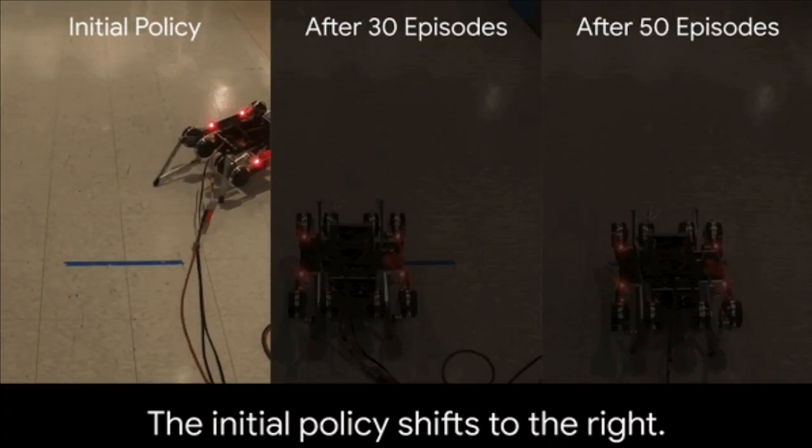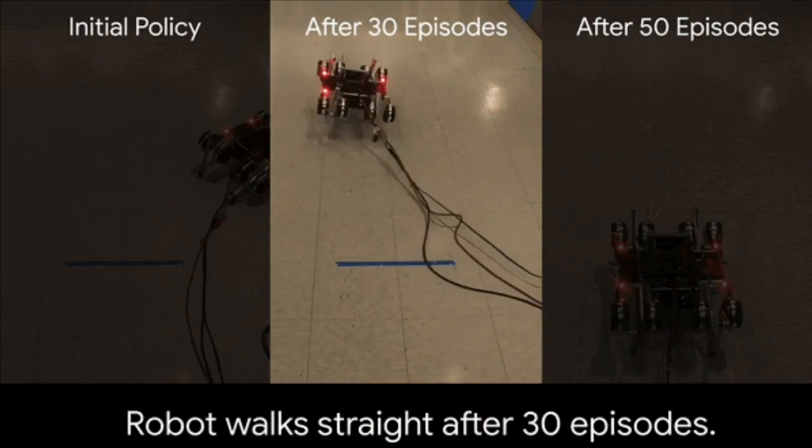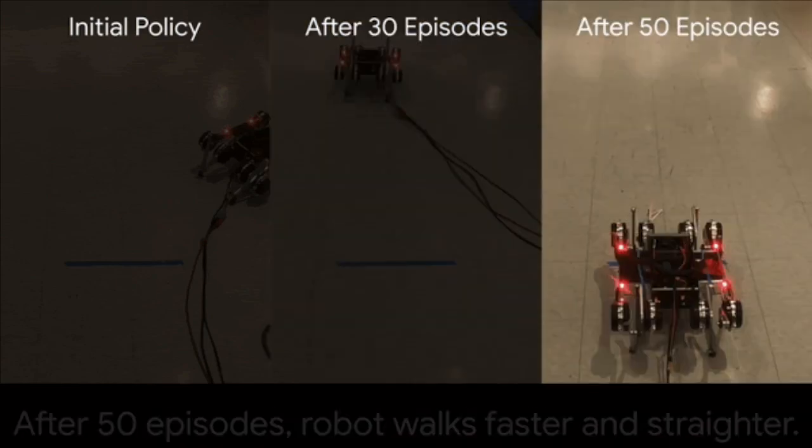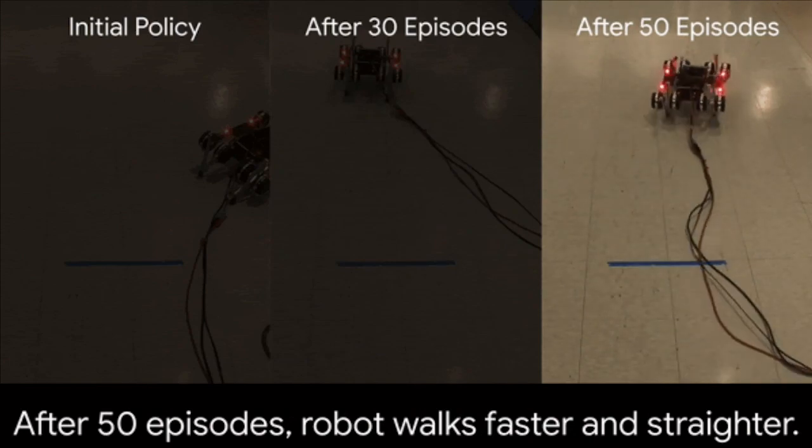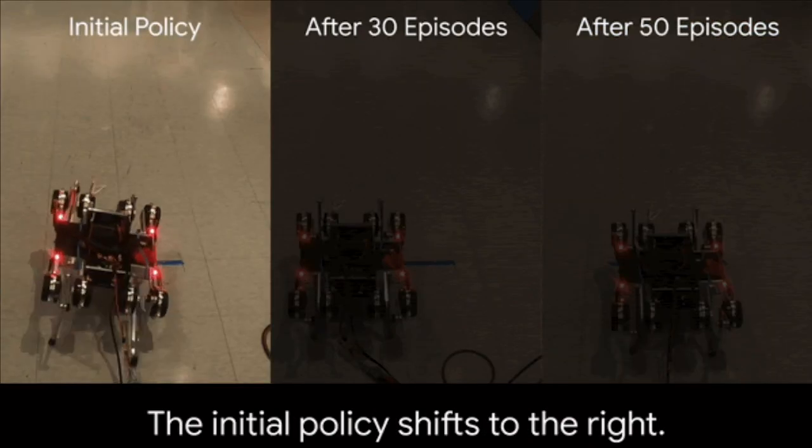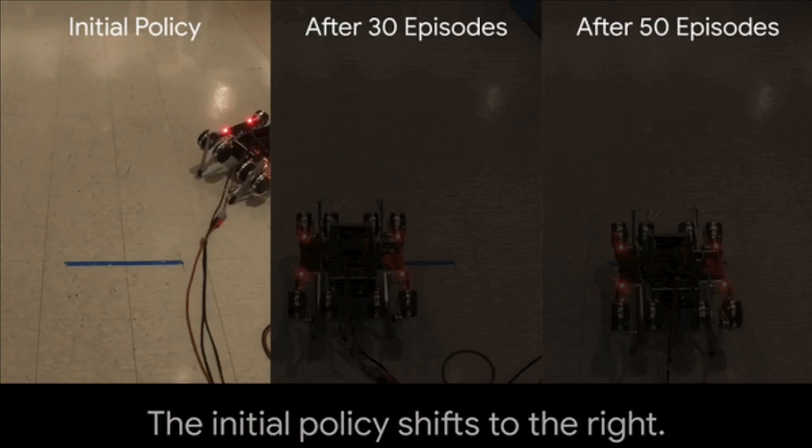As you can see in this video demonstrating the mass voltage task, when using ES-MAML, the initial meta-policy falls over on its side, while the batch-hill climbing process gradually produces an adaptive walking policy in at most 50 episodes.